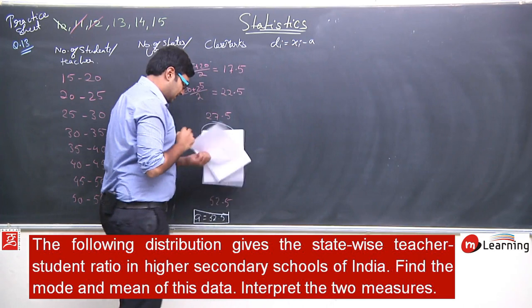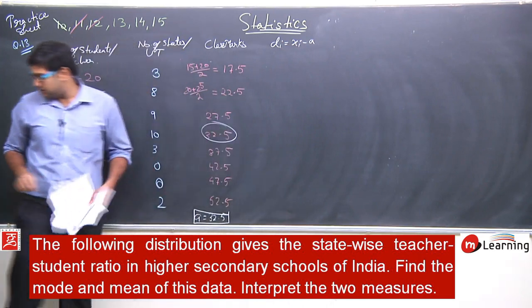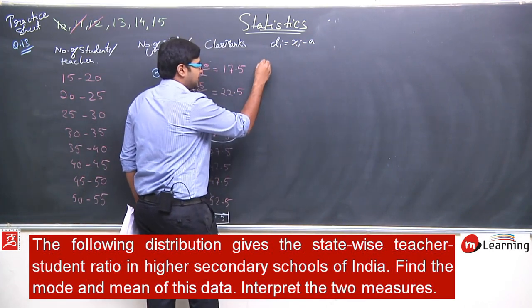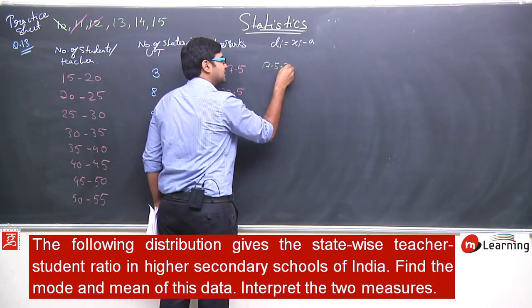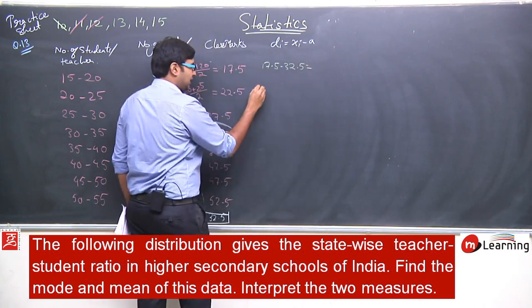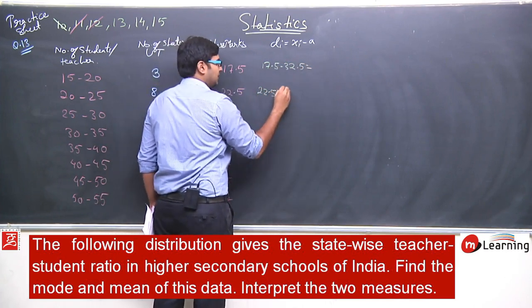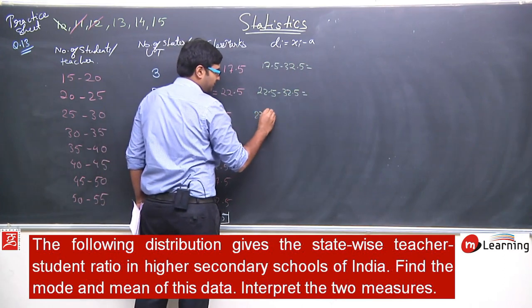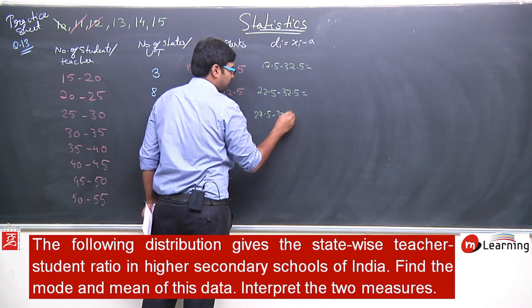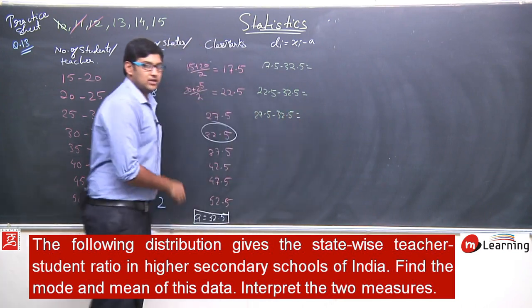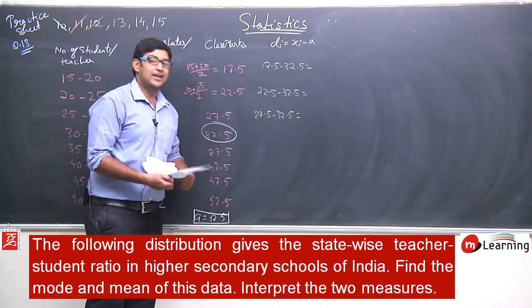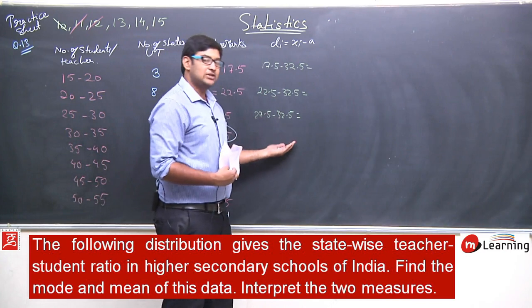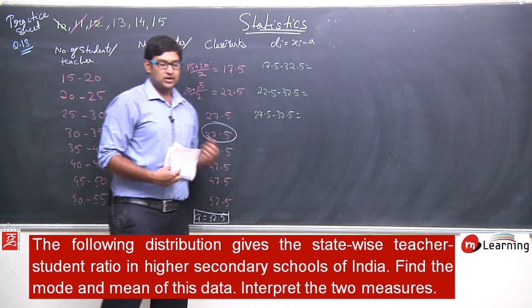To calculate the deviation, subtract the assumed mean from each class mark: 17.5 − 32.5, 22.5 − 32.5, 27.5 − 32.5, and so on. This gives −15, −10, −5, 0, 5, 10 in sequence.